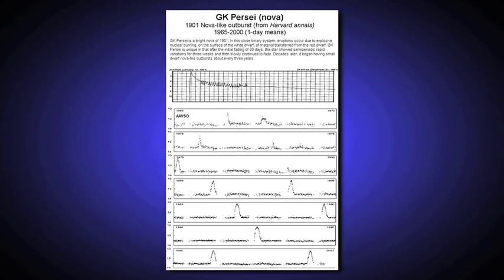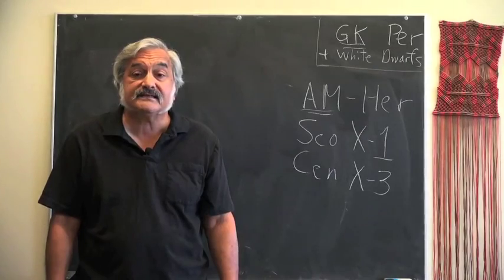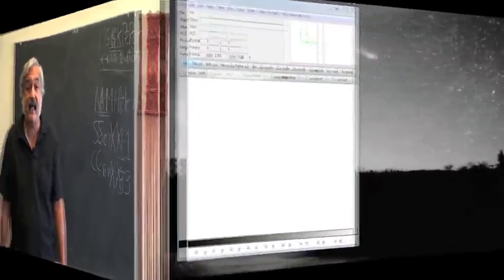It was during one of these outbursts in 2002 that NASA's Chandra satellite looked at the object to see if any X-rays were being emitted. Let's go to DS9 and check it out.